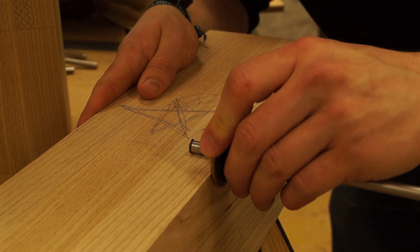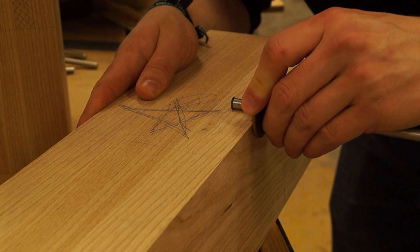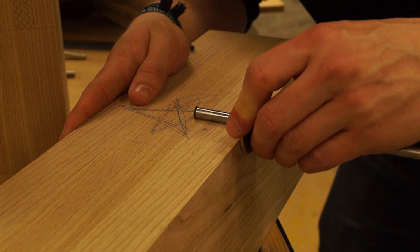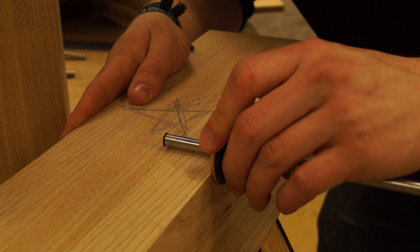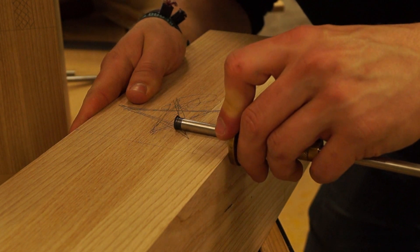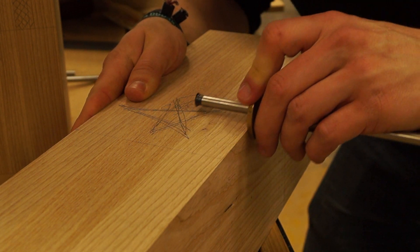Now the tenon on the front left leg where the vice hardware is, is a little bit different because it kind of has to wrap around the Benchcrafted Crisscross hardware that's going to be recessed into the front of the leg. So this is like a stepped mortise, which you'll see later on, but this takes three marking gauges to mark out.